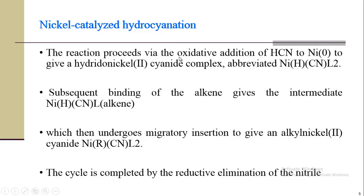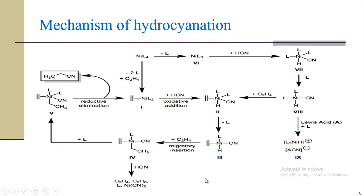The steps involve oxidative addition of HCN to a nickel catalyst to give hydrido-nickel cyanide complex, abbreviated as Ni-H-CN-L2, then binding of alkene gives an intermediate. After that, migration insertion to give alkyl-nickel cyanide, and at the last, reductive elimination, nitrile will be formed. This is the complete mechanism of how hydrocyanation takes place.